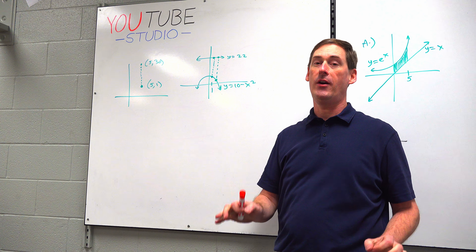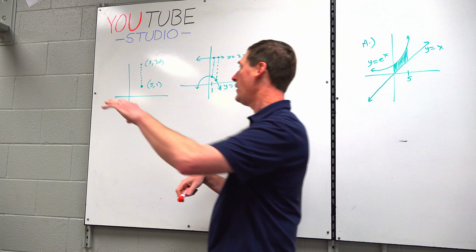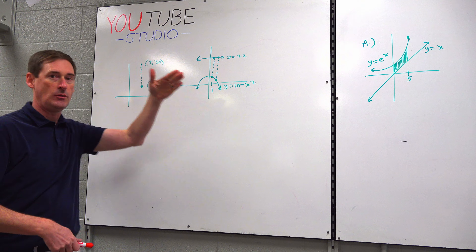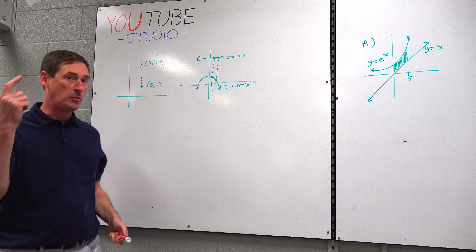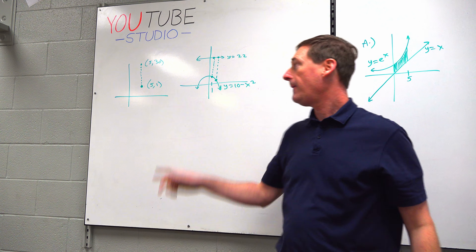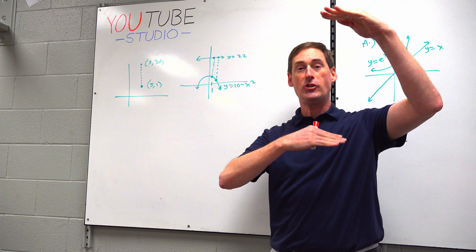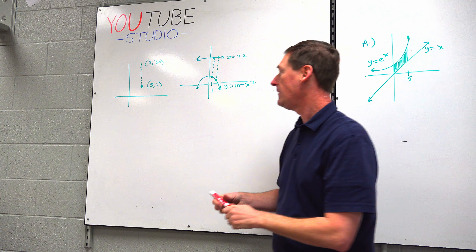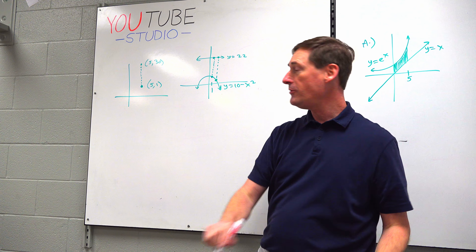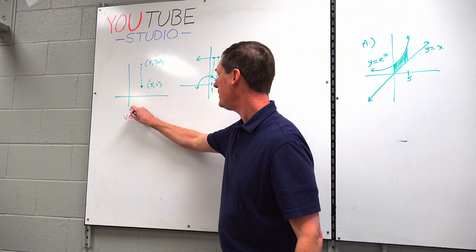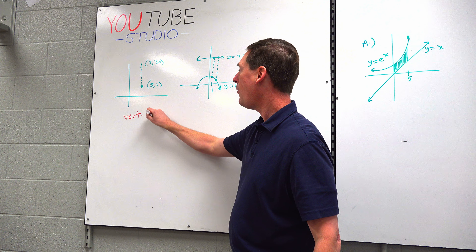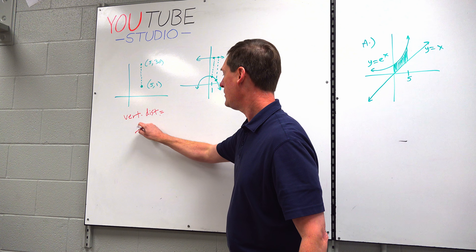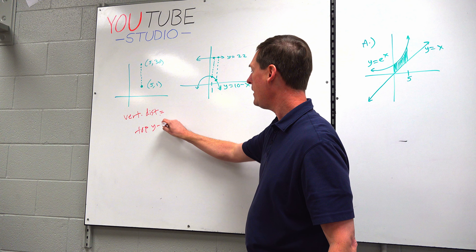Vertical distance will play a very important role today. You look at 30 and 1, and you want to do a vertical distance, and your brain spits out a number. Your brain looks at that and says that's 29 units long. But what does your brain really do? Vertical distance is top Y minus bottom Y. Top Y minus bottom Y.